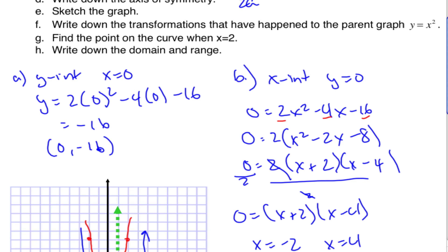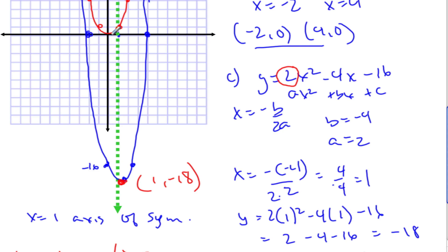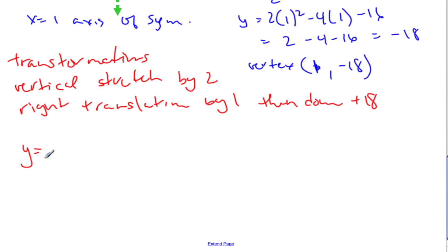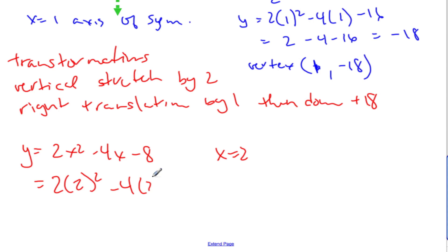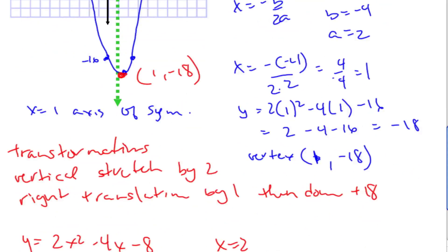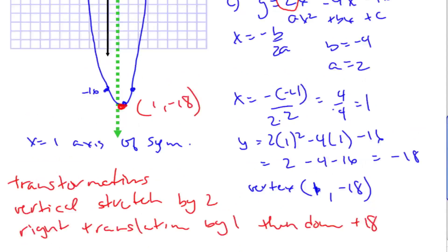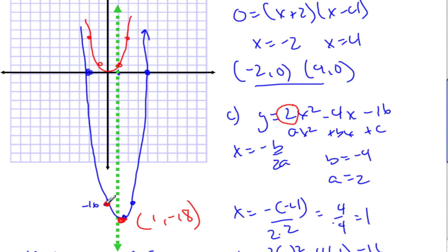Finally, find the point on the curve when x = 2. We could use symmetry since x = 2 is one unit to the right of the axis x = 1, mirroring x = 0. Let's verify by substitution: y = 2(2)² − 4(2) − 16 = 8 − 8 − 16 = −16. So the point is (2, −16), which matches our y-intercept (0, −16) reflected over the axis of symmetry.